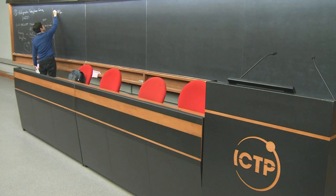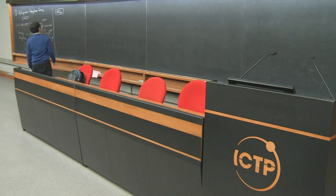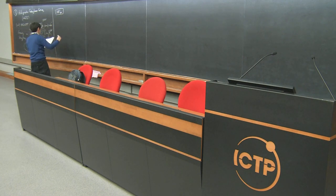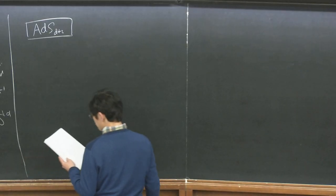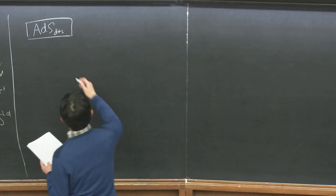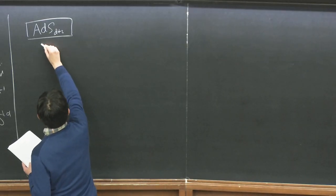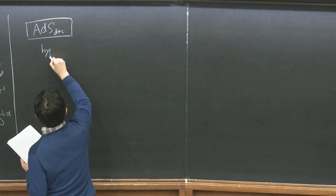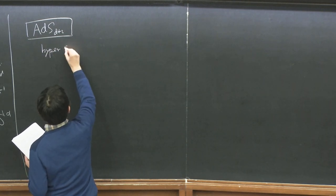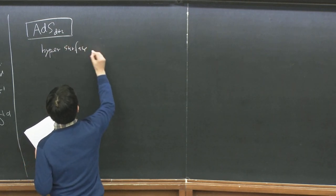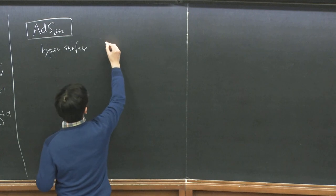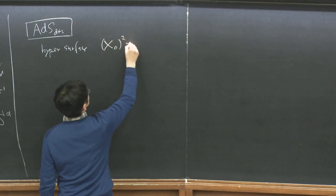We are going to focus on two different anti-de Sitter spaces. The first one is the so-called global ADS, and the second one is called Poincaré ADS. We take a hypersurface definition of anti-de Sitter space.